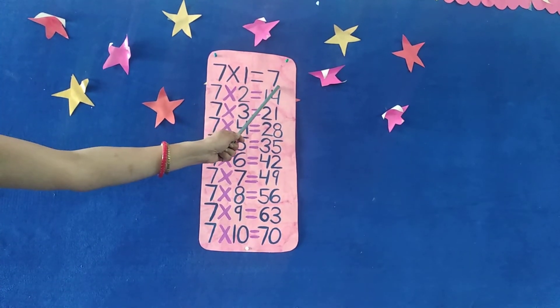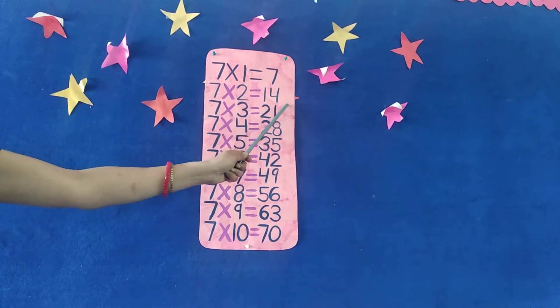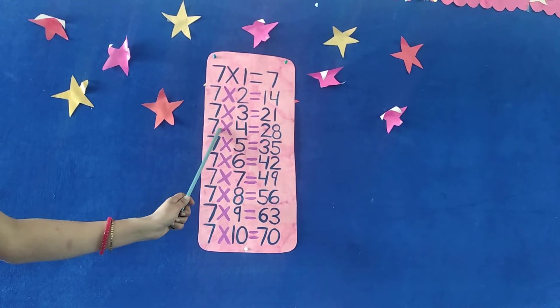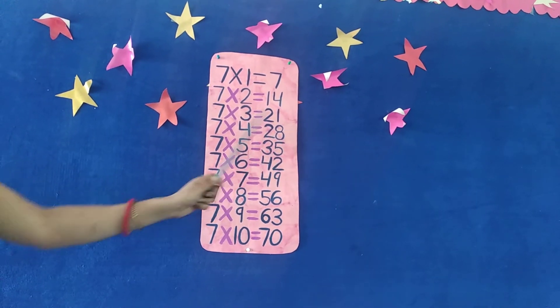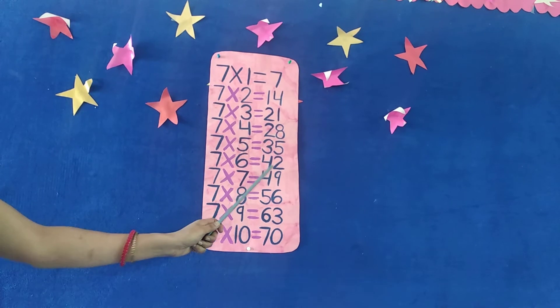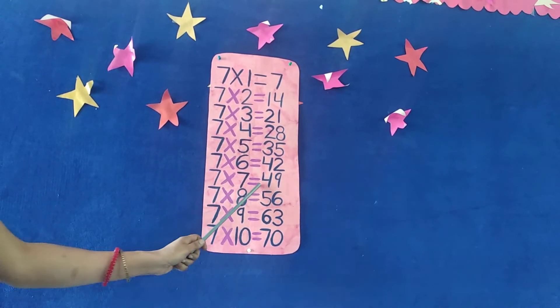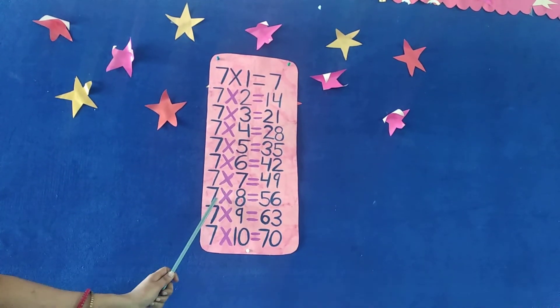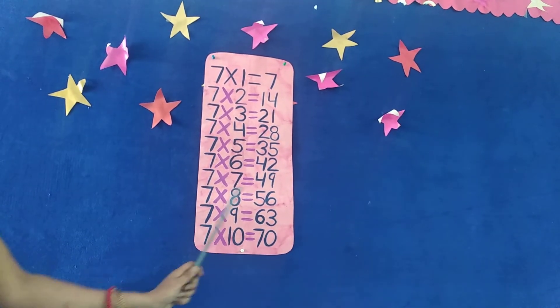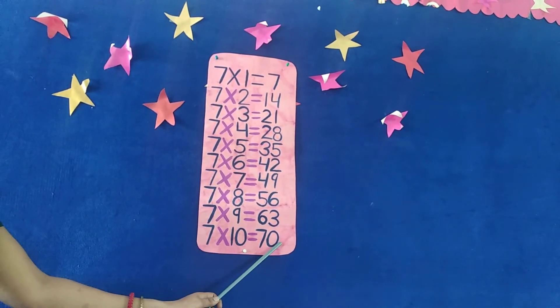7 ones are 7. 7 twos are 14. 7 threes are 21. 7 fours are 28. 7 fives are 35. 7 sixes are 42. 7 sevens are 49. 7 eights are 56. 7 nines are 63. 7 tens are 70.